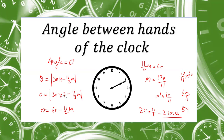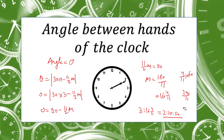For example, after 3, what time will they overlap? Put H = 3: 0 = 30(3) − (11/2)M, so (11/2)M = 90, giving M = 180/11 = 16 and 4/11 minutes. Converting 4/11 to seconds: (4/11) × 60 = 240/11 ≈ 22 seconds. So the two hands overlap after 3 at 3:16:22.